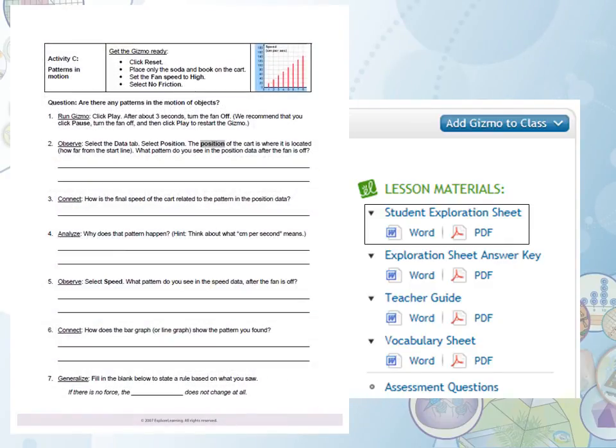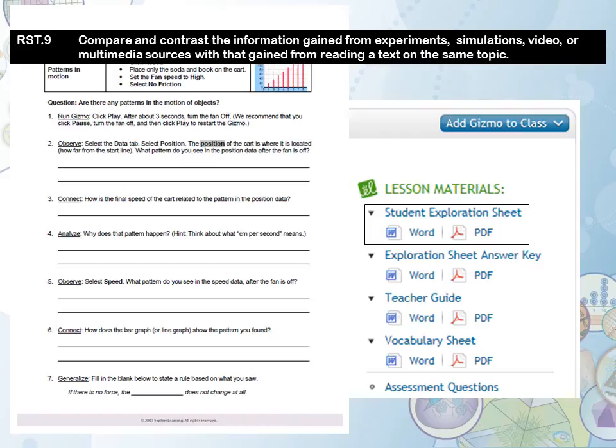In support of RST9, students can then use the knowledge gained from the gizmo experiment or simulation to compare and contrast information with other sources of information.